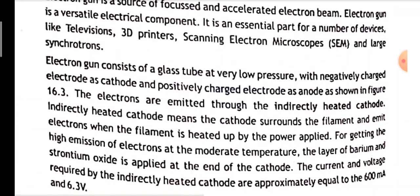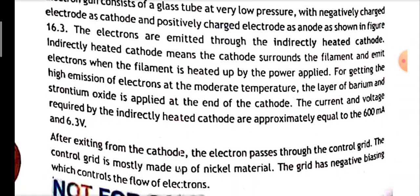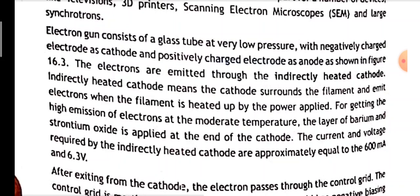The indirectly heated cathode means that the cathode surrounds the filament and emits electrons when the filament is heated up by the power applied. For getting high emission of electrons at moderate temperature, a layer of barium strontium oxide is applied. The current and voltage required by the indirectly heated cathode are approximately 600 mA and 6.3 volts.